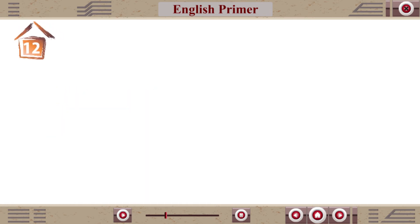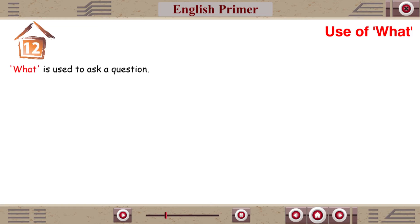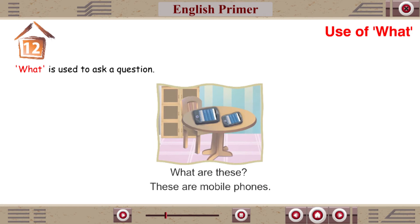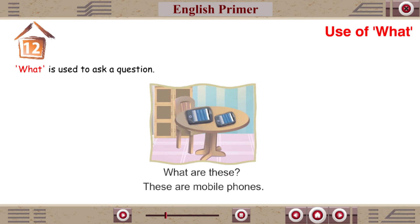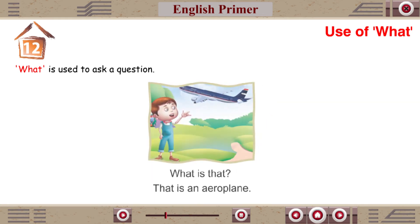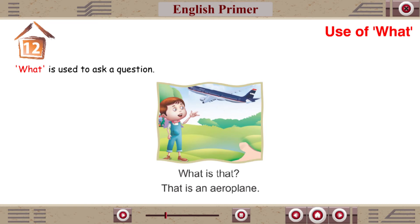Chapter 12: Use of What. What is used to ask a question. What are those? Those are elephants. What are these? These are mobile phones. What is this? This is my car. What is that? That is an aeroplane.